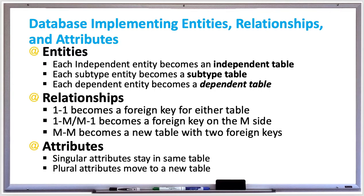Implementing relationships means converting relationships into tables or keys based on relationship cardinality. A one-to-one cardinality relationship becomes a foreign key which can go in the table on either side of the relationship. The foreign key is typically put in the table with fewer rows in order to minimize the number of null values, and it refers to the primary key of the opposite side. Many-to-one or one-to-many cardinality relationships become a foreign key on the many side referring to the table on the one side.